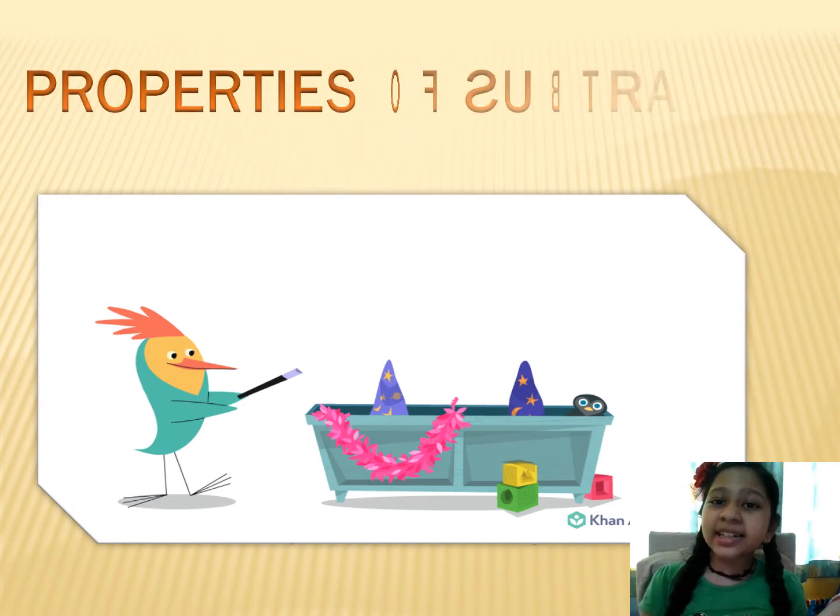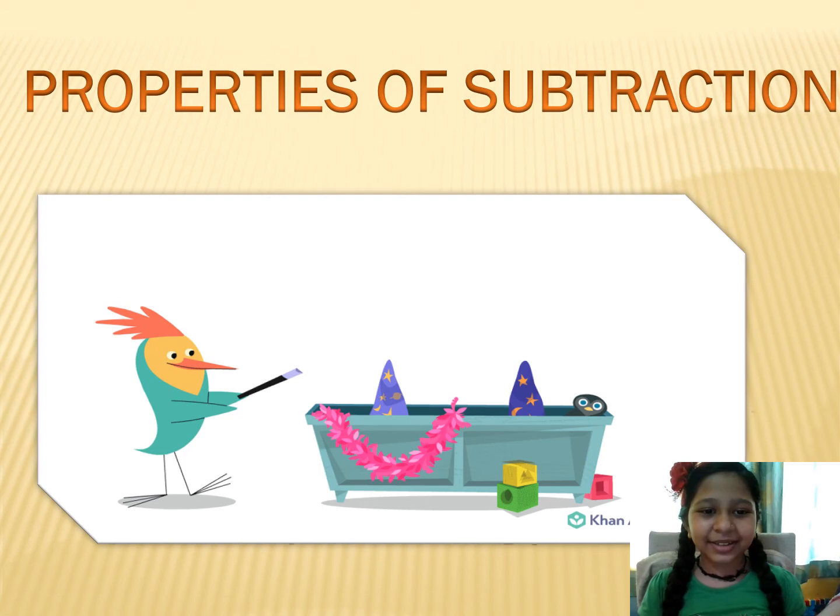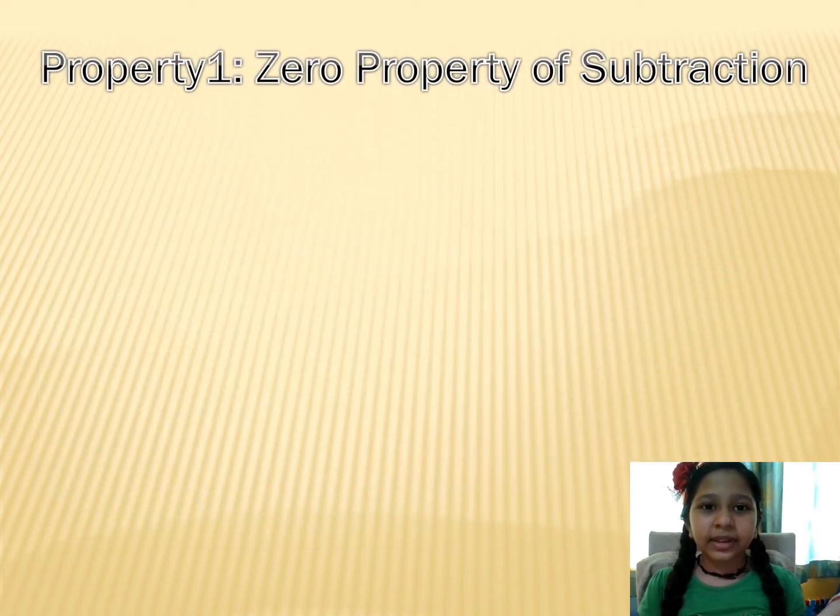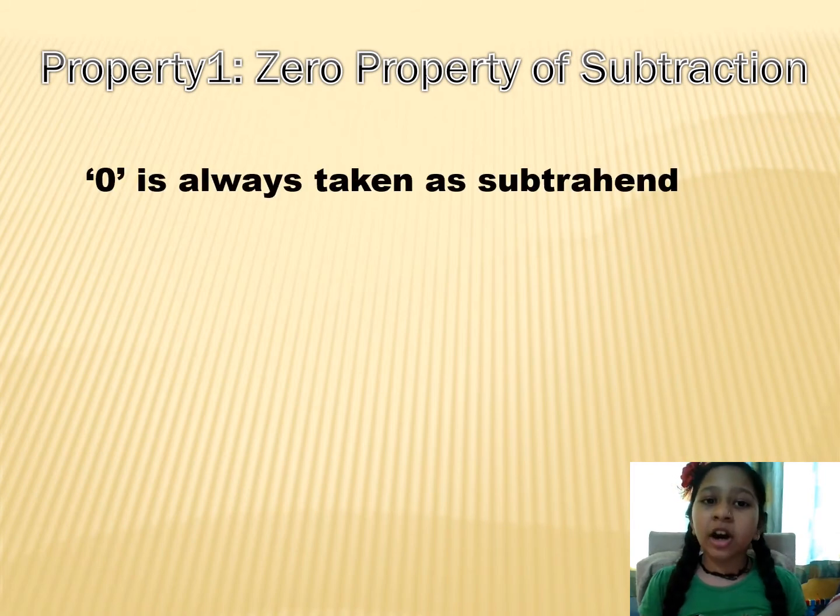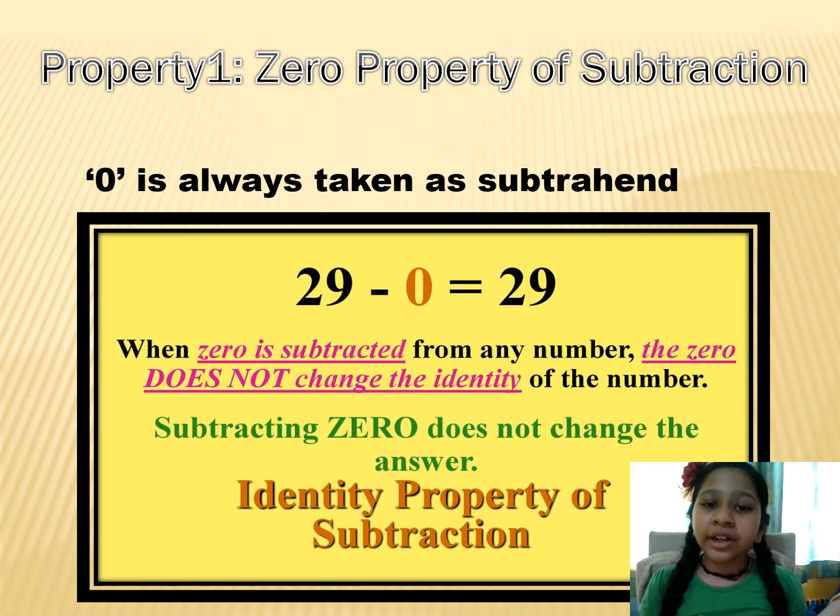Properties of subtraction. Property 1: Zero Property of Subtraction. 0 is always taken as subtrahend. Like 29 minus 0 is equal to 29. When 0 is subtracted from any number, the 0 does not change the identity of the number. Subtracting 0 does not change the answer. This is the identity property of subtraction.